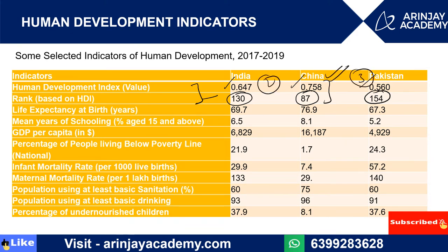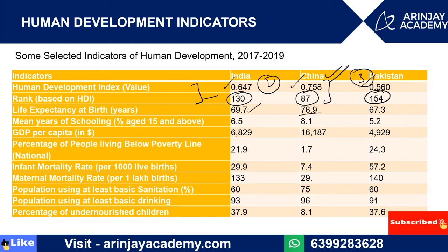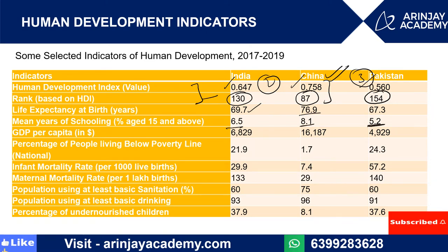Let's see the life expectancy. The life expectancy of India is 69.7, China is 76.9, and Pakistan is 67.3. Mean years of schooling: in India it is 6.5, in China it is 8.1, and in Pakistan it is 5.2.